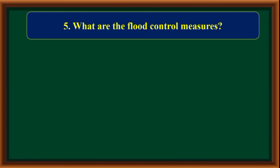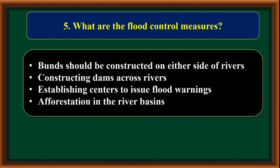What are the flood control measures? Bunds should be constructed on either side of rivers; constructing dams across rivers; establishing centers to issue flood warnings; afforestation in the river basins.